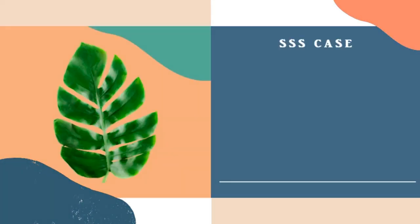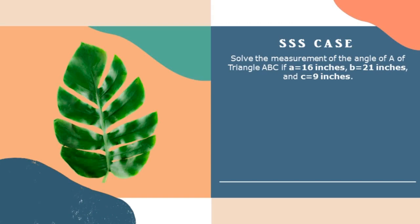Our second example is an SSS case. Solve the measurement of the angle of A from triangle ABC if a is equal to 16 inches, b is equal to 21 inches, and c is equal to 9 inches. Our formula is cosine A is equal to b squared plus c squared minus a squared over 2bc.